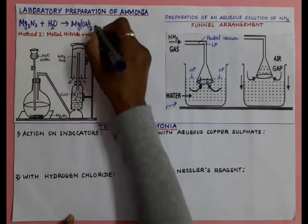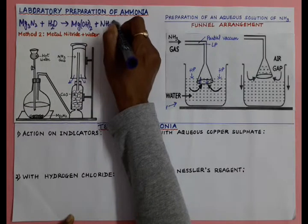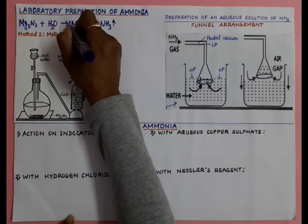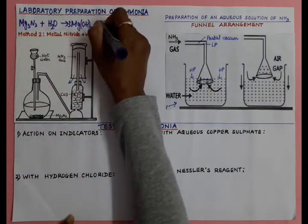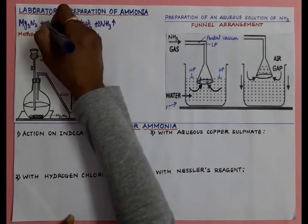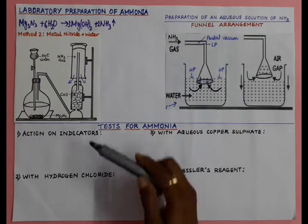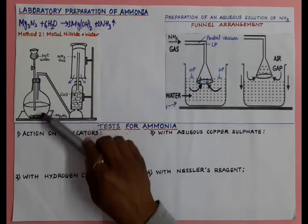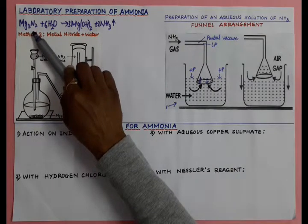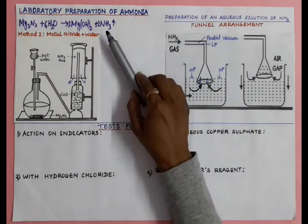The reaction is: Mg₃N₂ + hot water → magnesium hydroxide + ammonia gas. To balance: Mg₃ gets 3, N₂ gets 2, and hydrogen is 6 + 6 = 12, so we put 6 on the water side. This is how magnesium nitride reacts with hot water and ammonia gas is released.